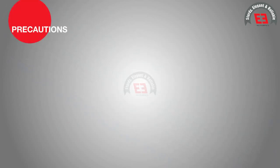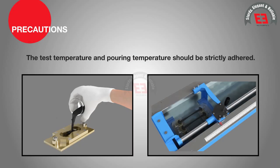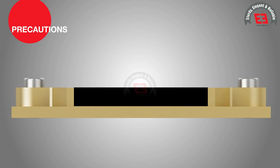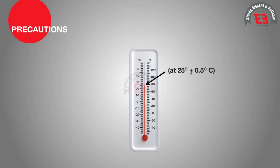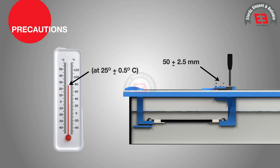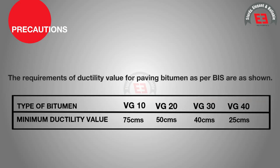Precautions. The test temperature and pouring temperature should be strictly adhered to. The minimum width at the cross section of the sample should be 10 mm by 10 mm. The stretching thread should not touch the bottom of the ductility machine. The test temperature of 25 degrees Celsius plus or minus 0.5 degrees Celsius and rate of pulling of 50 mm per minute plus or minus 2.5 mm per minute must be maintained. The requirements of ductility value for paving bitumen as per BIS are as shown.